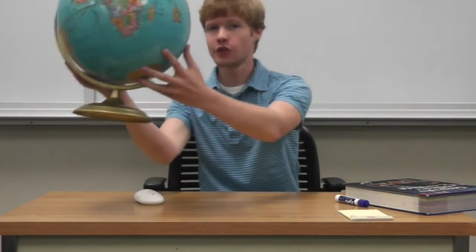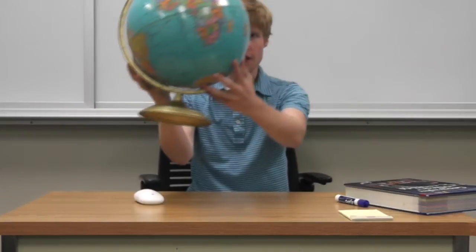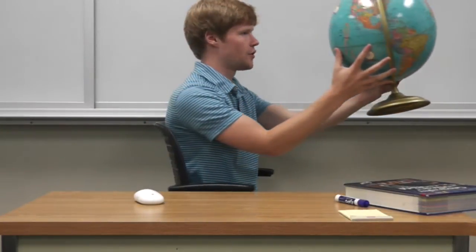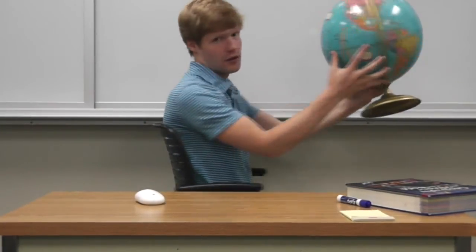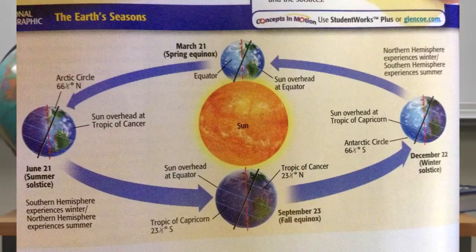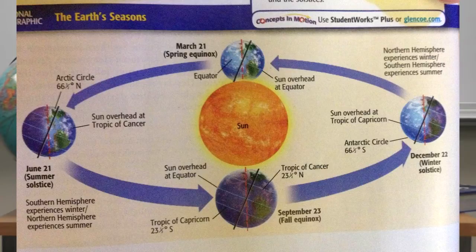Another thing that affects the climate is the Earth's revolution. When the Earth is spinning on its axis, that is the Earth's rotation. The revolution is the time it takes for the Earth to make a complete circle around the Sun. The tilt of the Earth combined with its revolution is what causes the seasons.